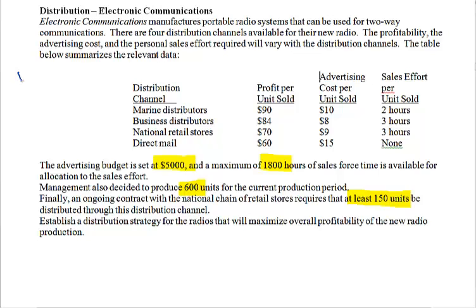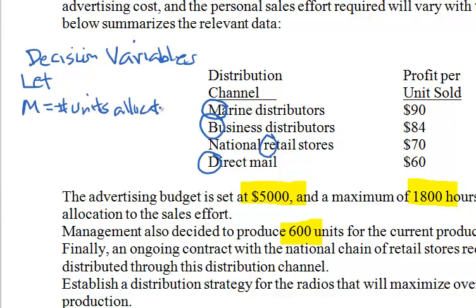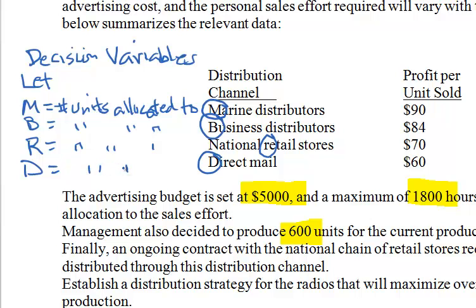Now we understand enough to start formulating the linear programming model. First, the decision variables. We take one letter from each distribution channel: M for marine distributors, B for business distributors, R for retail stores, and D for direct mail. Let M represent the number of units allocated to marine distributors, B to business distributors, R to retail stores, and D to direct mail.